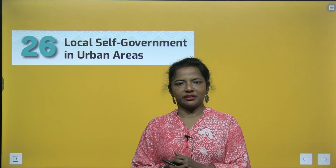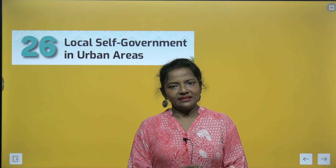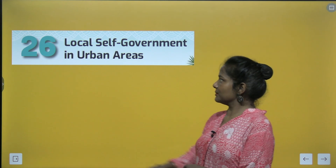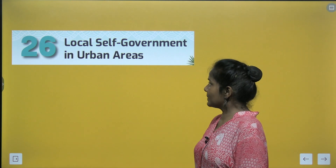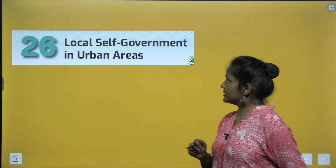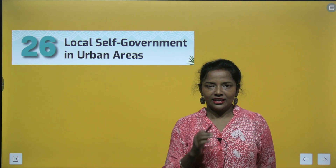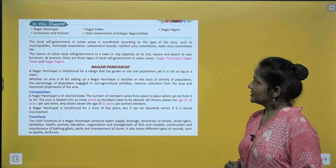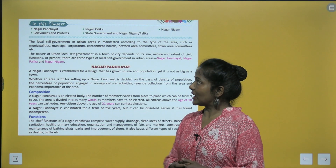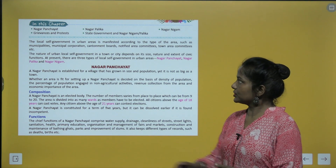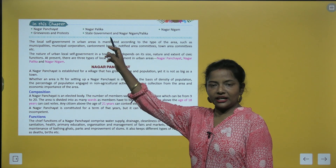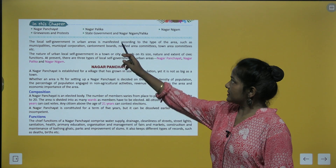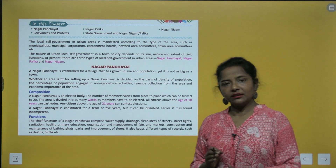Hello kids, this is your mentor Aparajita in your social science class with chapter number 26, class 6. The chapter is 'Local Self-Government in Urban Areas.' In this chapter, we are going to read about Nagar Panchayat, Nagarpalika, Nagar Nigam, grievance and protest, and the state government and Nagar Nigam or Nagarpalika.